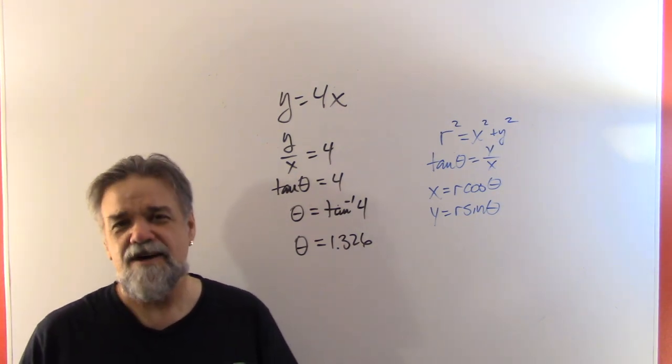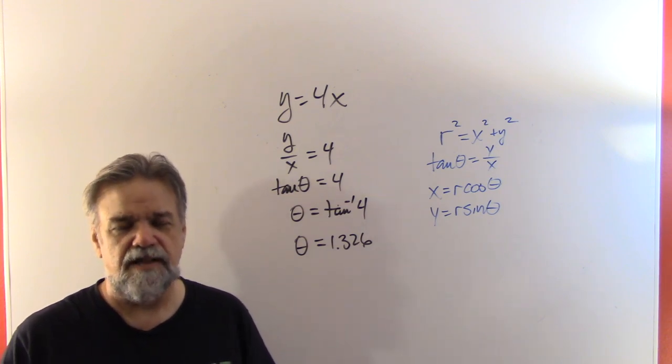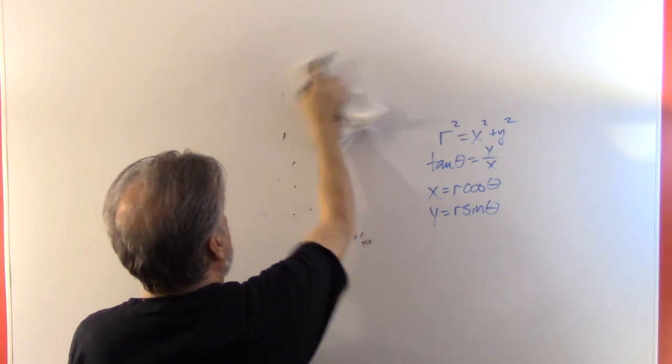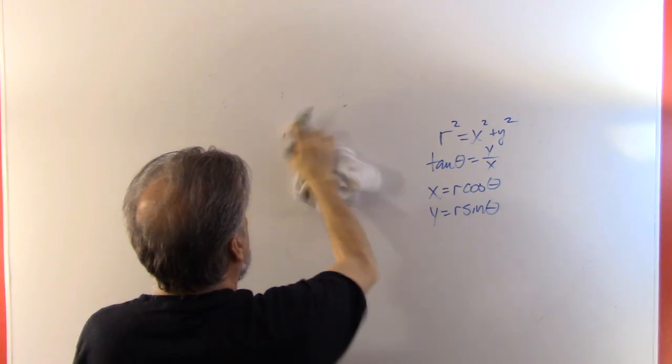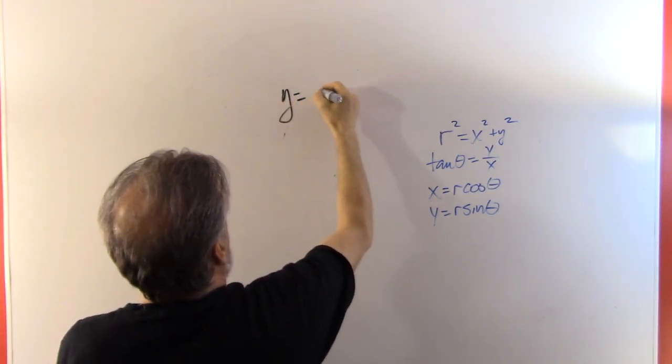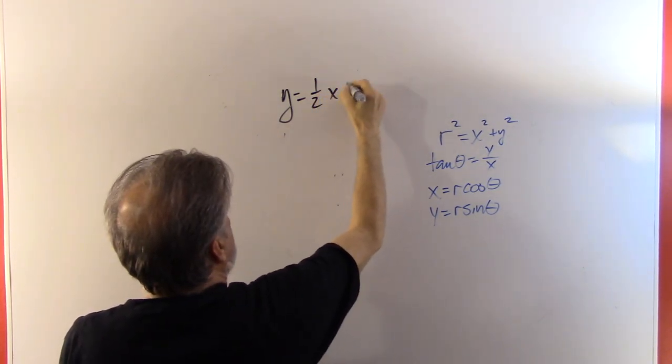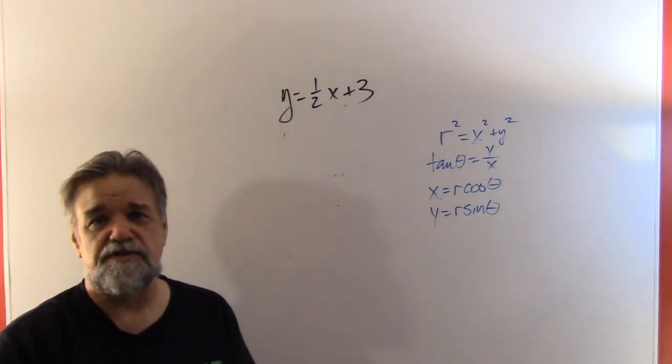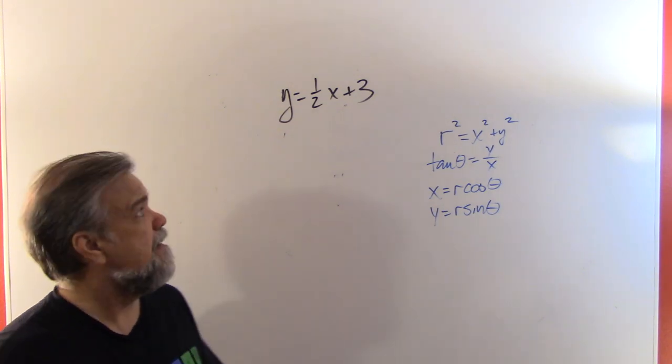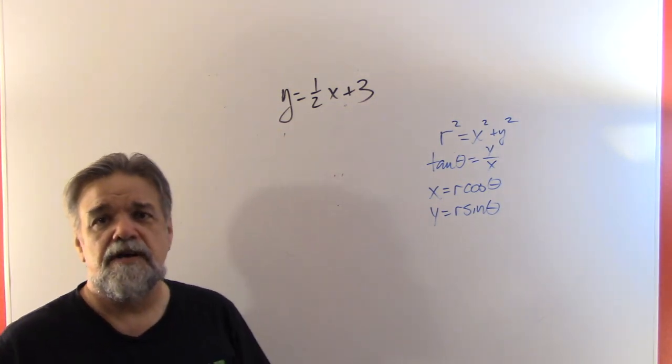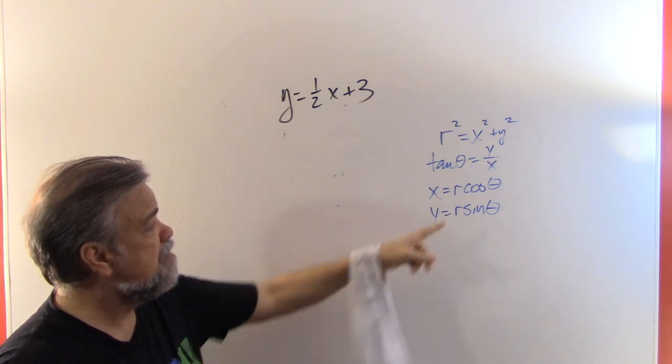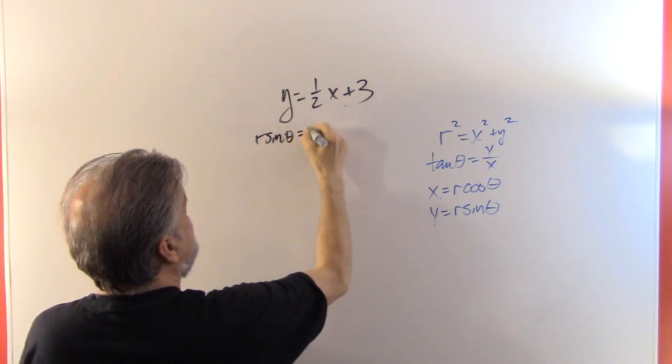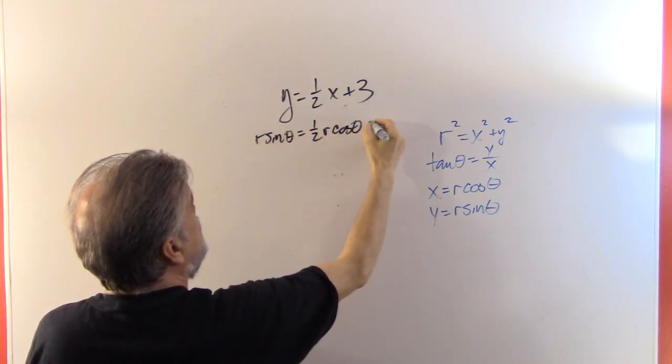Let's look at a line that doesn't go through the origin. Let's look at y equals 1 half x plus 3. Now on this one, this isn't as simple as just dividing both sides by x and taking the inverse tangent. No, because you got that 3 in there that's messing things up. So this time, I think what I'm going to have to do is use these two substitutions.